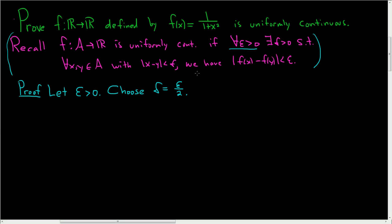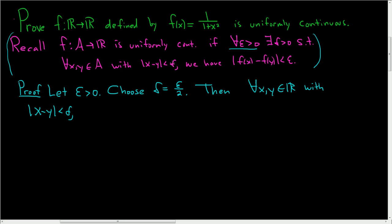I figured this out beforehand because I've done this problem before. But you'll see as we go through the proof, we're kind of going to figure it out as we go through it. So then, for all x, y in ℝ, with the distance between x and y less than δ, what we'll do is look at the difference of f(x) and f(y) and show it's smaller than ε. So we have f(x) = 1/(1+x²) minus f(y) = 1/(1+y²).